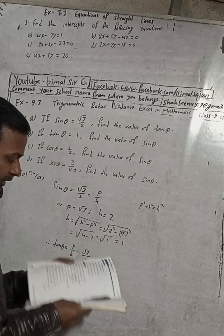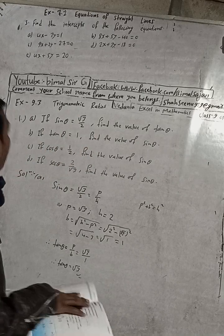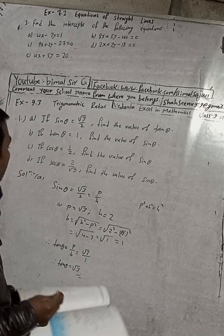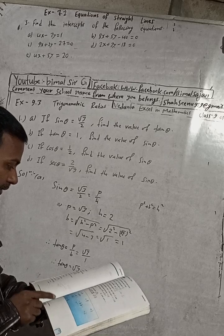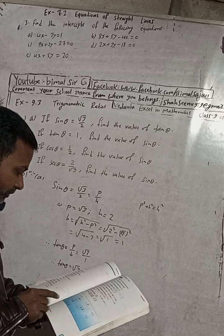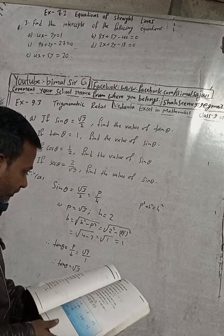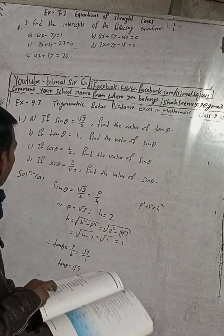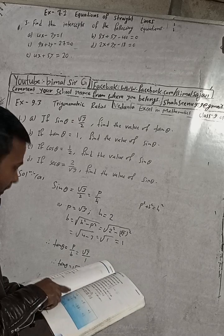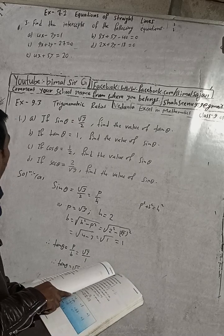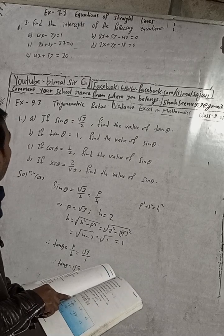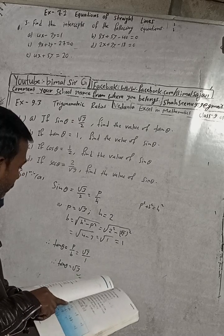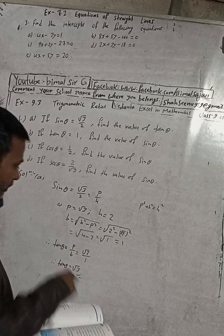The answer in the book for question 9.3, number 1A, is √3 — correct. The answer is √3.